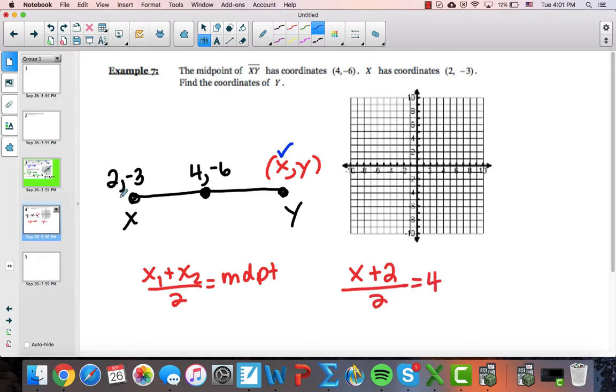So I did x plus 2, its average, would give me 4. I multiply both sides by 2, and I get x plus 2 equals 8, because the 2s here cancel. I multiply this 2 to that 4, subtract 2, and I get an x-coordinate of 6.